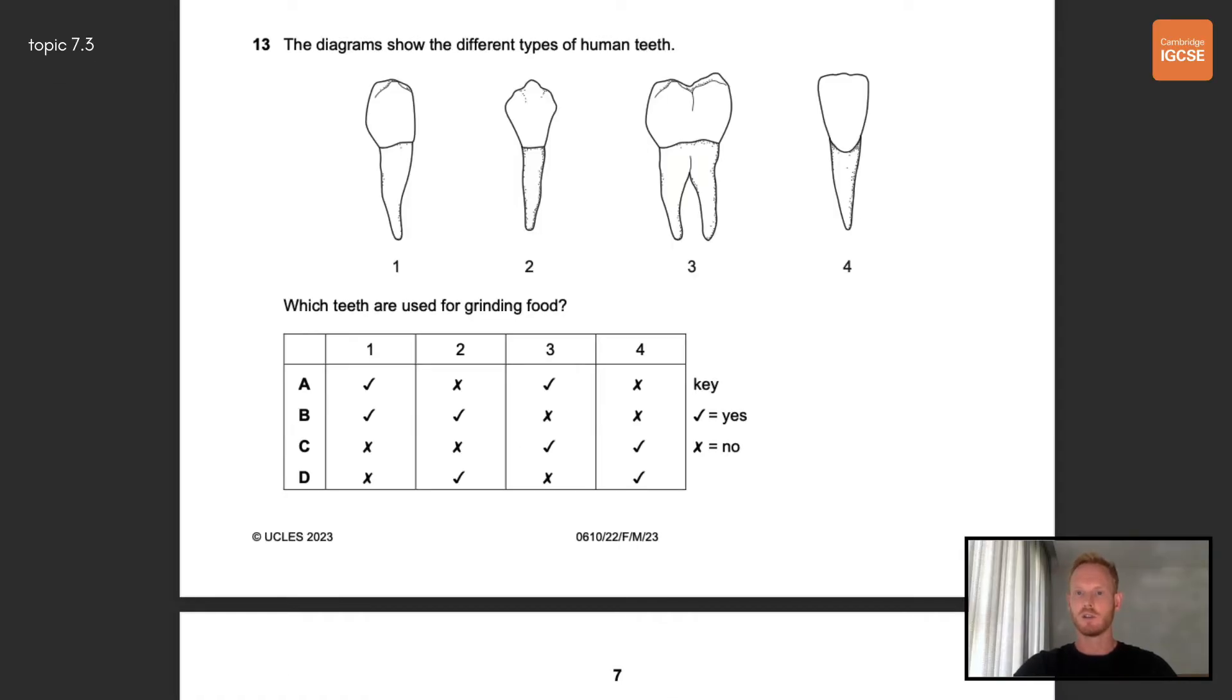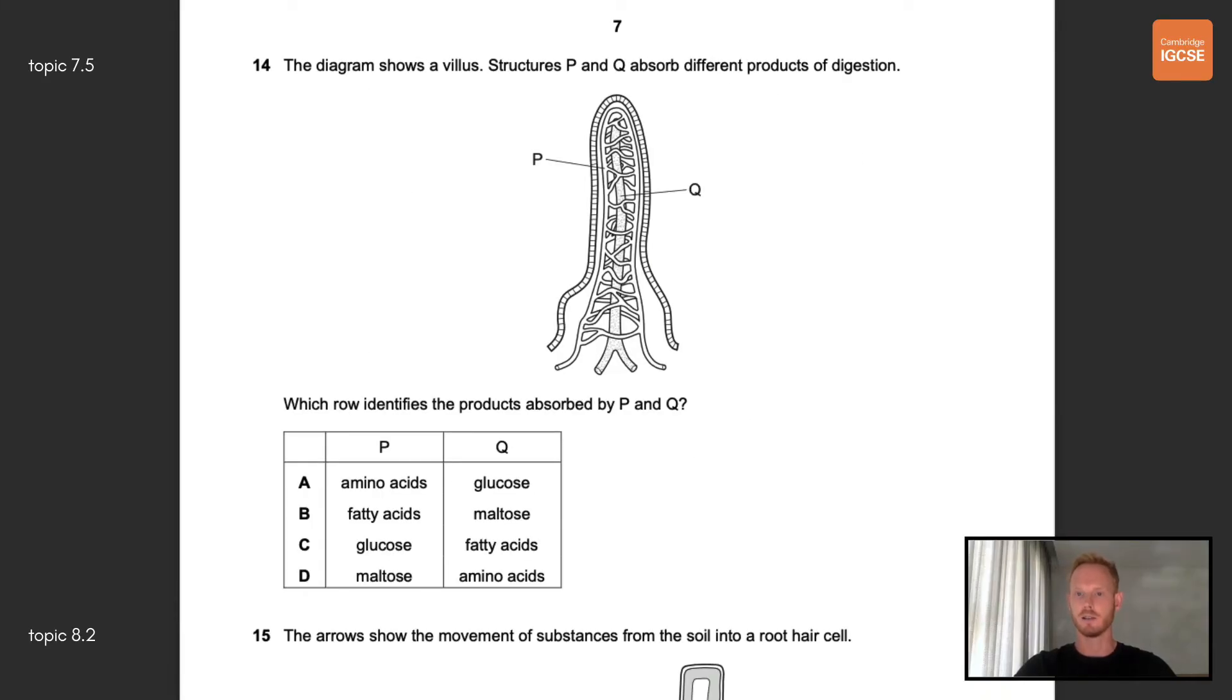Number 13, the diagram shows the different types of human teeth. Which teeth are used for grinding food? Tooth number one is a premolar and tooth number three is a molar. Both have knobbly surfaces called cusps which help to crush and grind food into smaller particles. The correct answer is therefore A. Number 14, the diagram shows a villus. Which row identifies the products absorbed by P and Q? P is a blood capillary which absorbs both glucose and amino acids. Q is a lacteal which absorbs lipid molecules, that is fatty acids and glycerol. The correct row in the table is therefore row C.